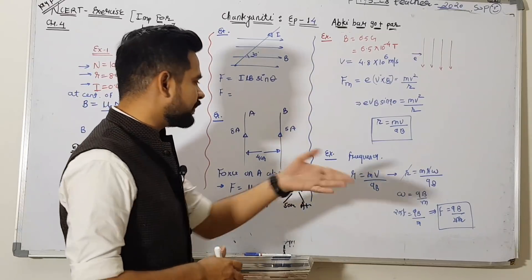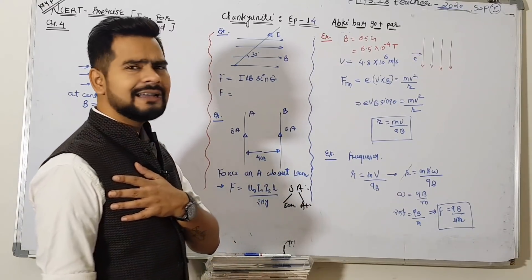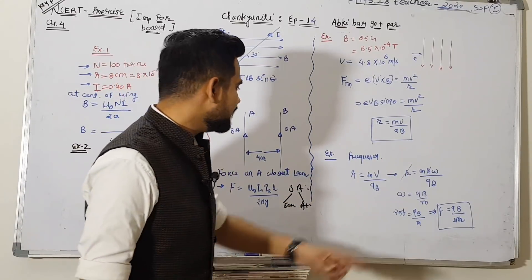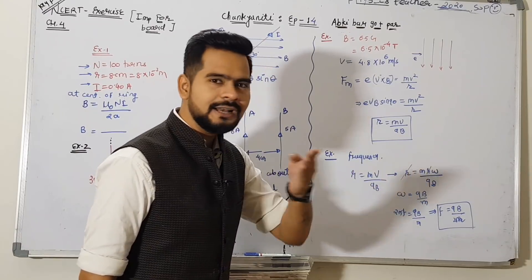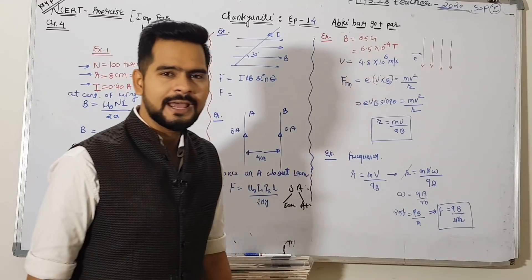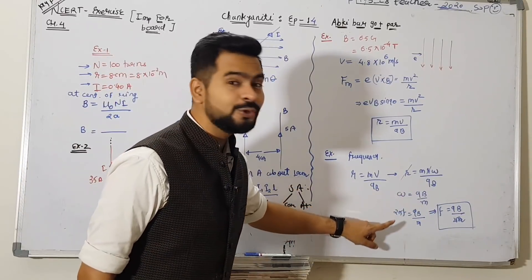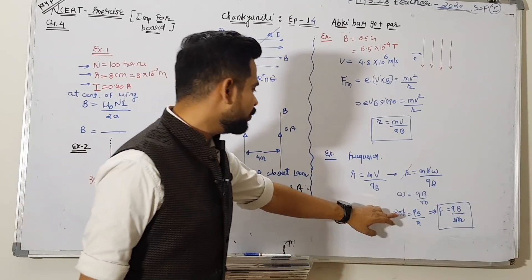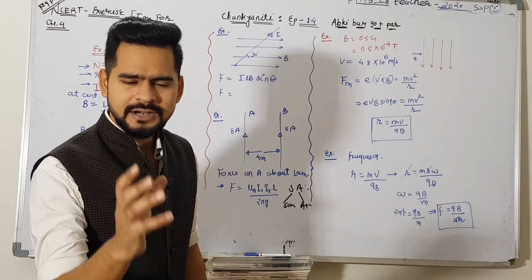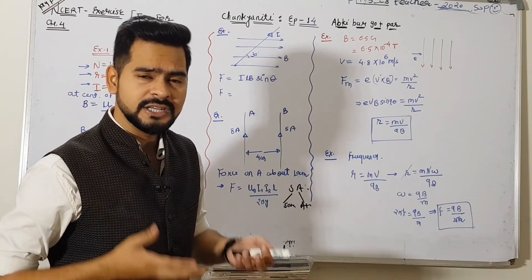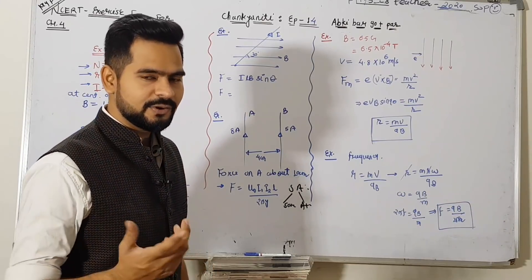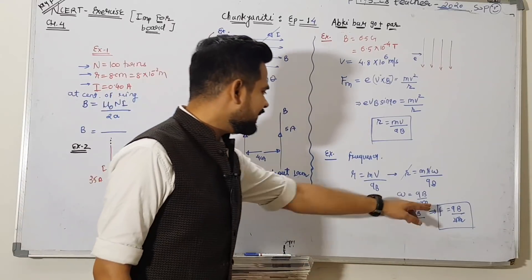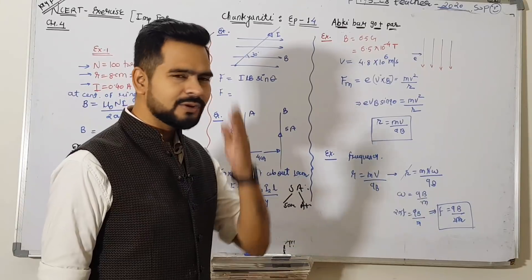Theta - angle between magnetic field and velocity - is 90 degrees, so sin 90 = 1. Kaam khatam. Iske baad aise question hai ki calculate the frequency, and comment on whether it depends on velocity or not. V = rω, so V ki jagah par rω rakh do - r se r kat jaata hai. Omega = qB/m. Aur hum sab jaante hain ki ω = 2πf, so frequency nikal jaati hai. Time period poochhe to woh bhi nikaal lo: 2πf = qB/m. Physics is all about imagination.